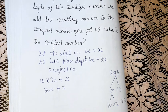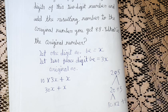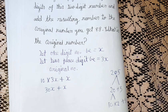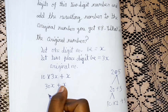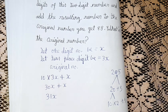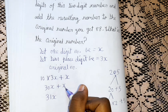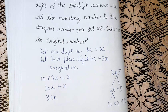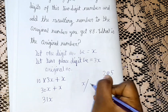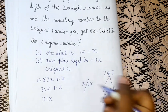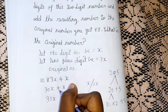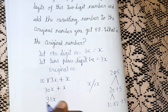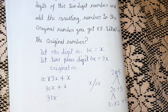10 into 3 is 30, so we have 30x plus x. Now, just x means 1x, and 30 plus 1 is 31, so we get 31x. That is our original number: 31x. Now let's find the new number after interchanging the digits.